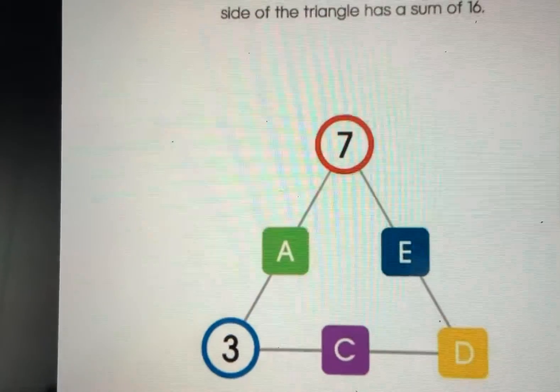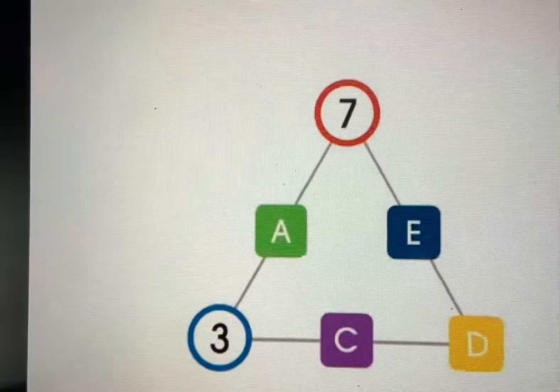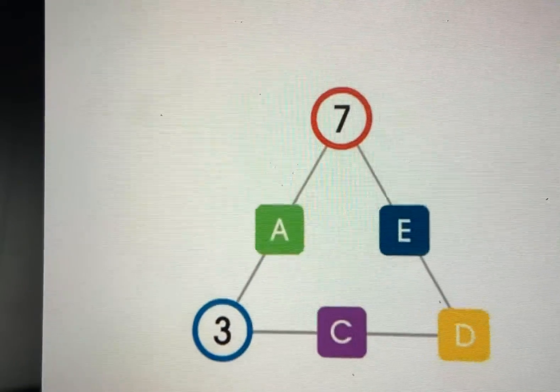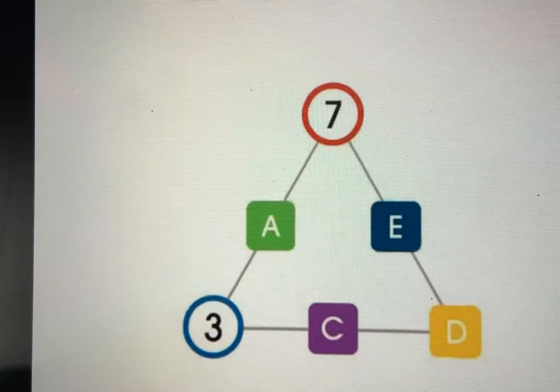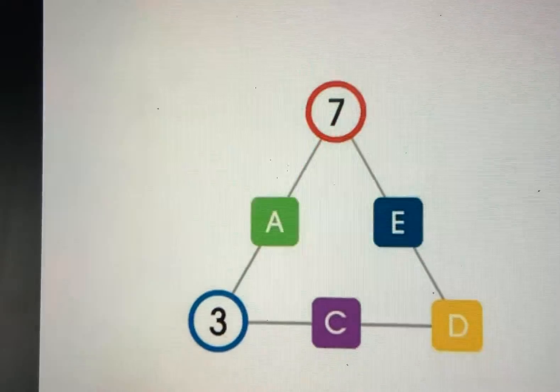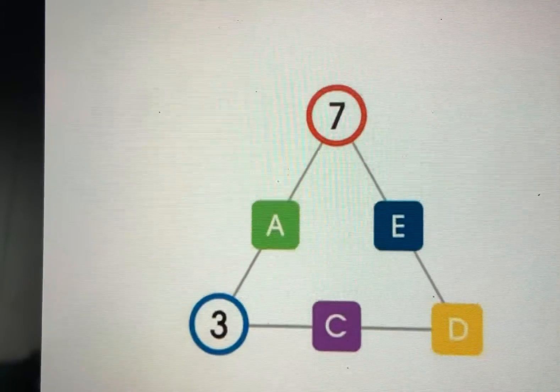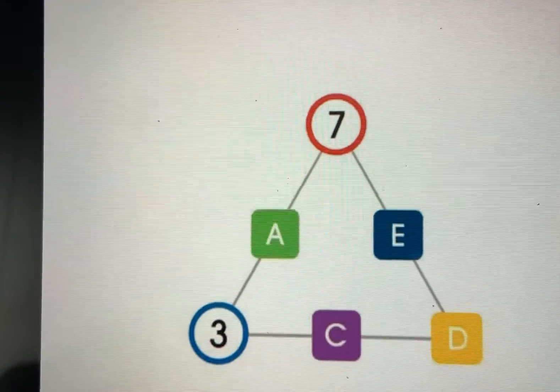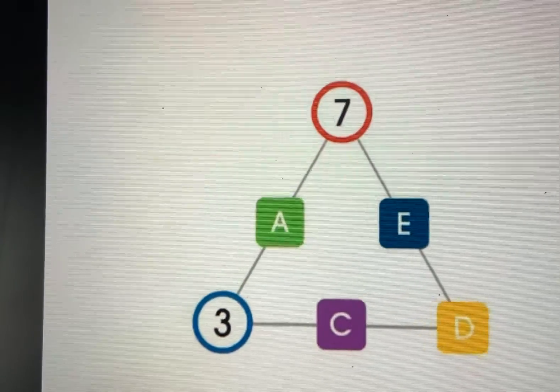Already we have used 3 and 7. So 3 plus 7 equals 10. So to add, the rule is we have to get the sum 16.